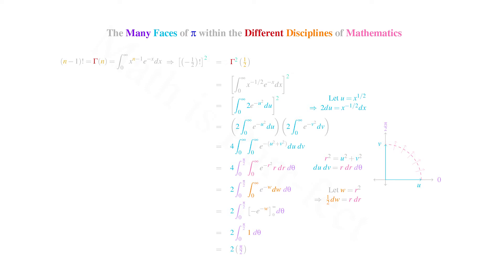Hence, twice pi over 2 leaves us with the fact that pi can now be expressed as the square of the gamma function, evaluated at 1 half.